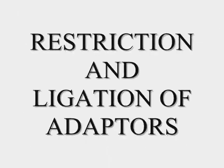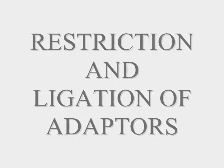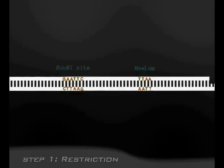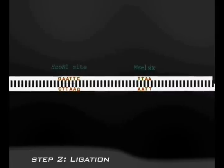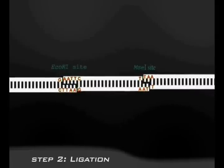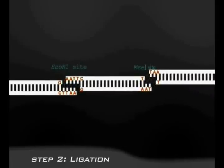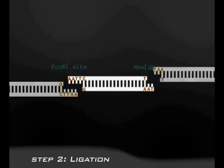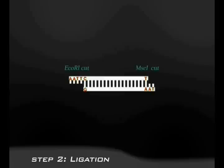Next comes the restriction and ligation of adapters. A restriction enzyme is added to the cDNA mixture. The two enzymes used are EcoRI and MseI, which cut at their respective restriction sites. EcoRI is a rare 6-base cutter and MseI is a frequent 4-base cutter. The ligation of restriction fragments using EcoRI adapter and MseI adapter then takes place.